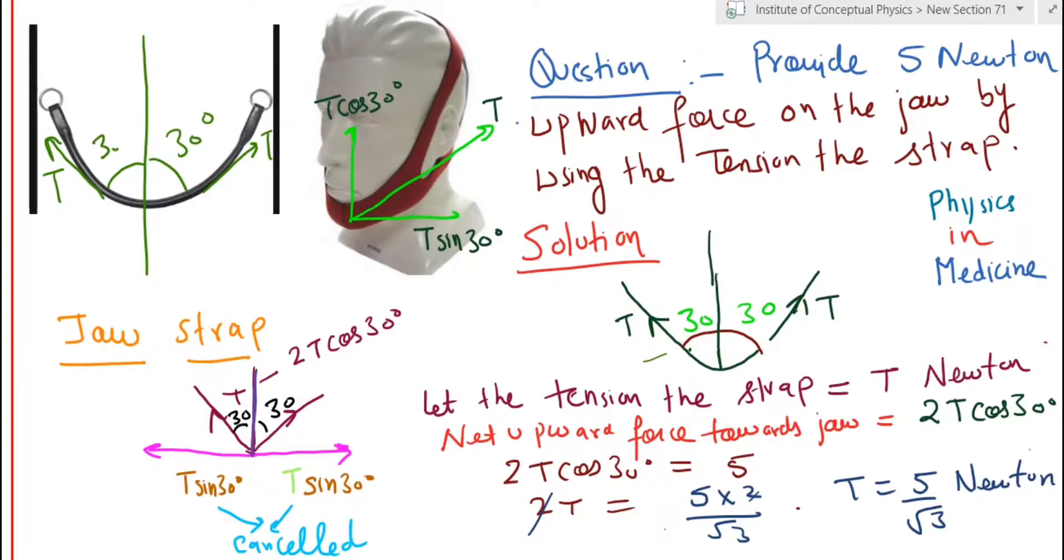Now for example, there is a man who has a snoring problem. A person has a jaw injury. In many cases, you have to wear a chin strap or a jaw strap. You can see I've shown a strap being worn on the human face. And the purpose of wearing the strap, I told you, could be to avoid snoring.